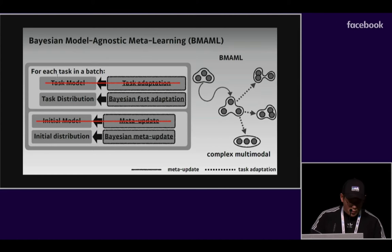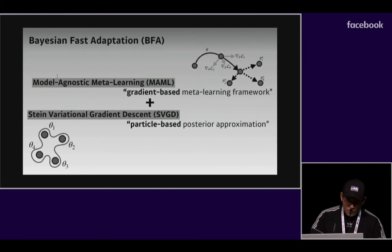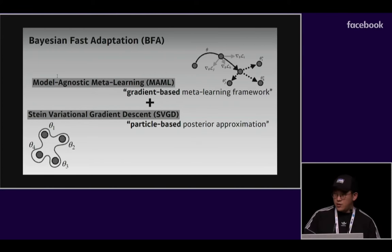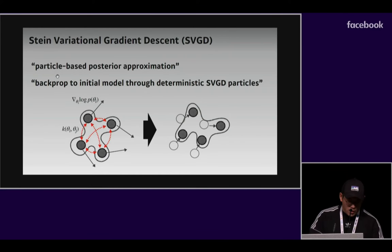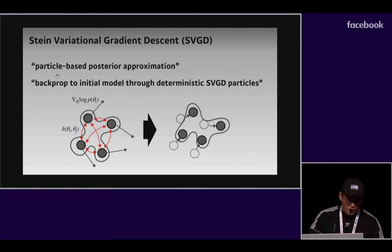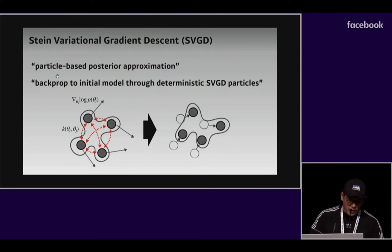To do this, we propose Bayesian fast adaptation and Bayesian meta-update using Chaser Loss. For Bayesian fast adaptation, we employ Stein variational gradient descent to the hierarchical probabilistic interpretation of MAML. Unlike previous works, this particle-based posterior approximation allows capturing complex multimodal distributions. SVGD is a nonparametric variational method that maintains a set of particles, and each particle is updated by combining gradients of other particles weighted by kernel distance. Our method takes advantage of the fact that this update is deterministic, and thus we can backpropagate through it.